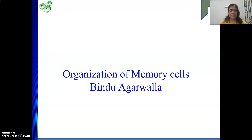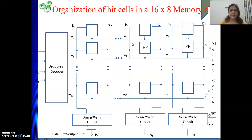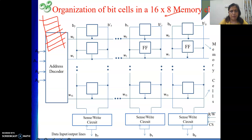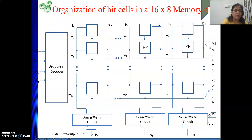Hello friends, welcome to my channel. Today in this video we will see organization of memory cells in a chip. Here we have taken one example of a 16 by 8 memory chip. That means total number of locations is 16, and each location can hold 8 bits of data. To select one of the locations from 16 combinations, we require 4 input address lines — A0, A1, A2, A3 — connected to an address decoder.